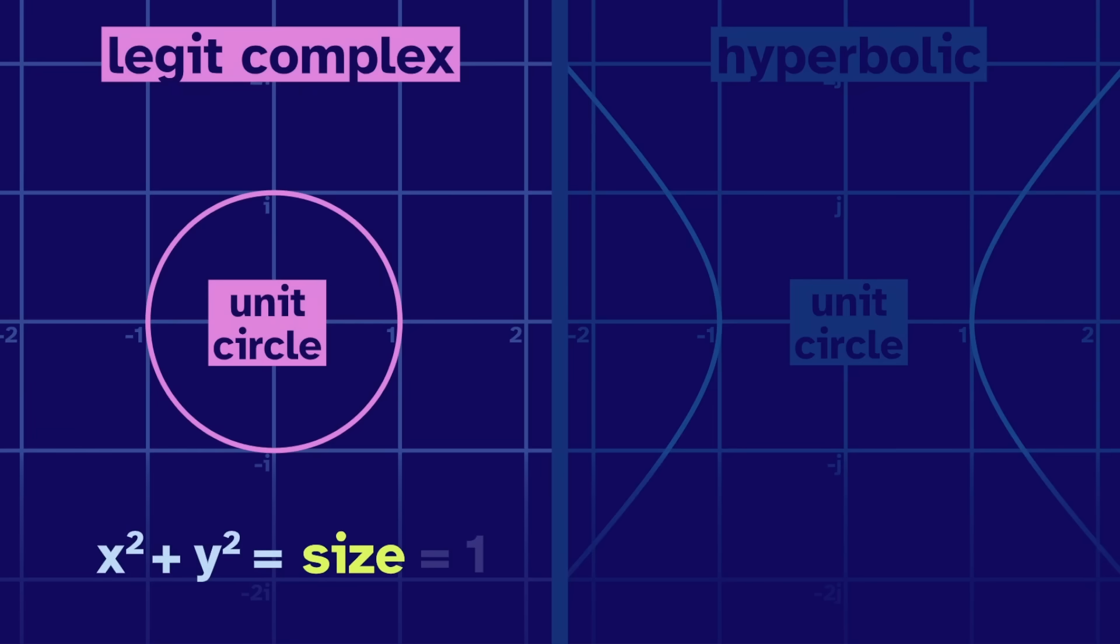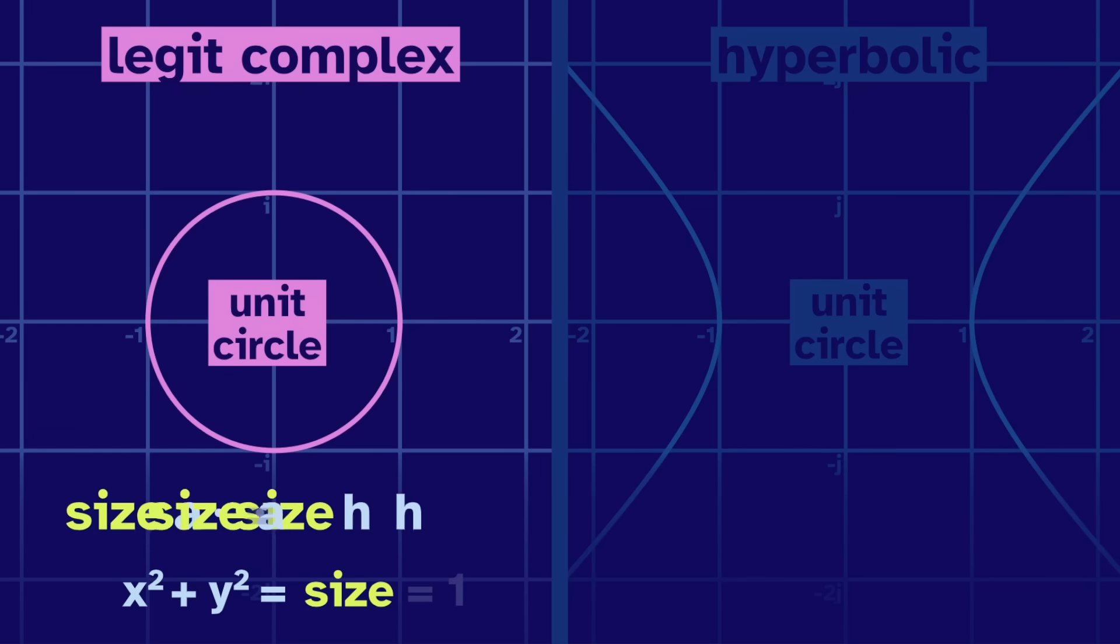And we could also say this is all the numbers with size equal to 1. This is a useful measurement of size, because the size of any a times the size of any b equals the size of ab. When complex numbers multiply, so do their sizes, just like the real numbers.